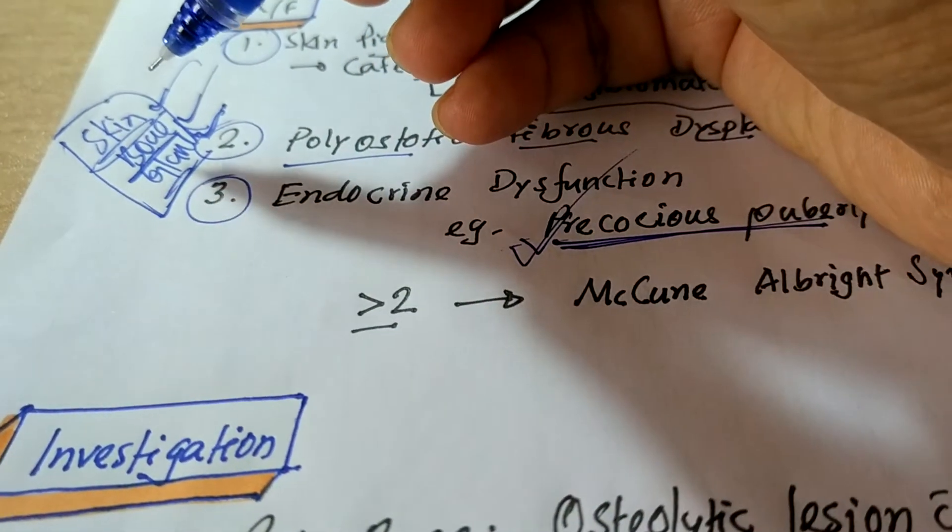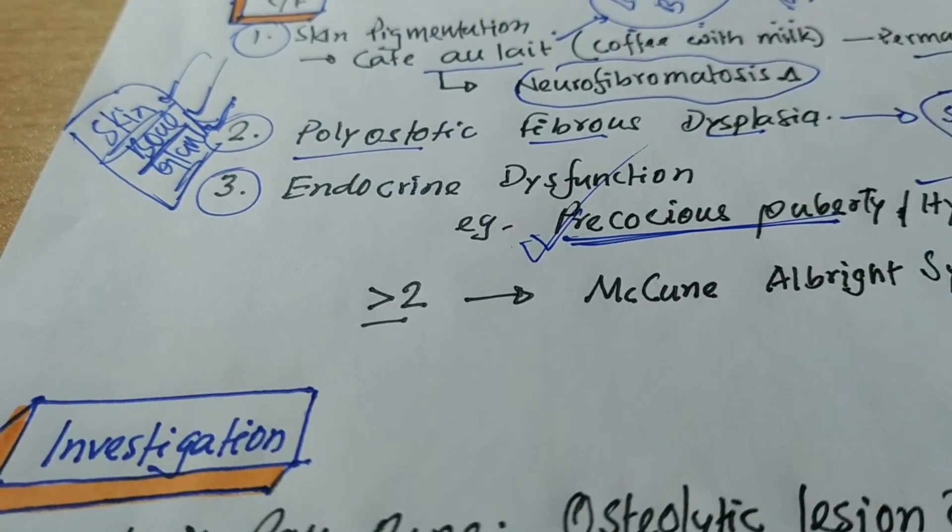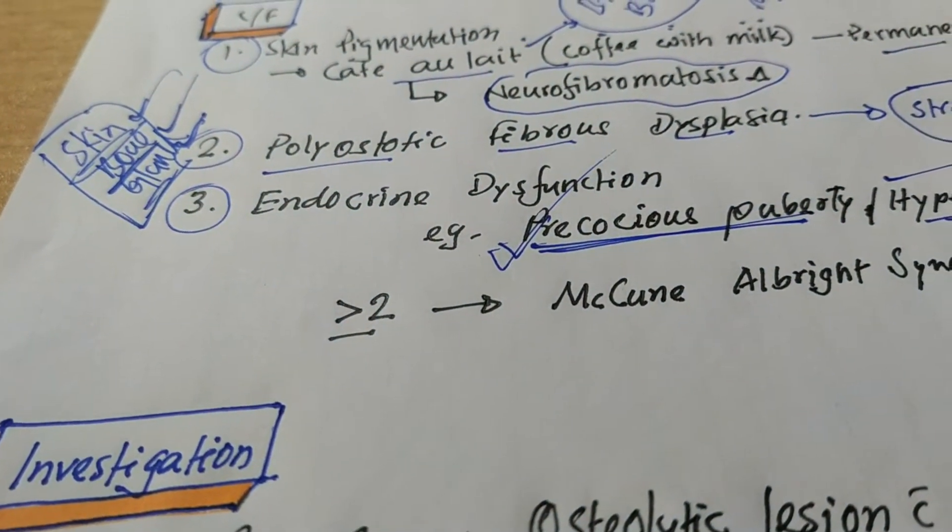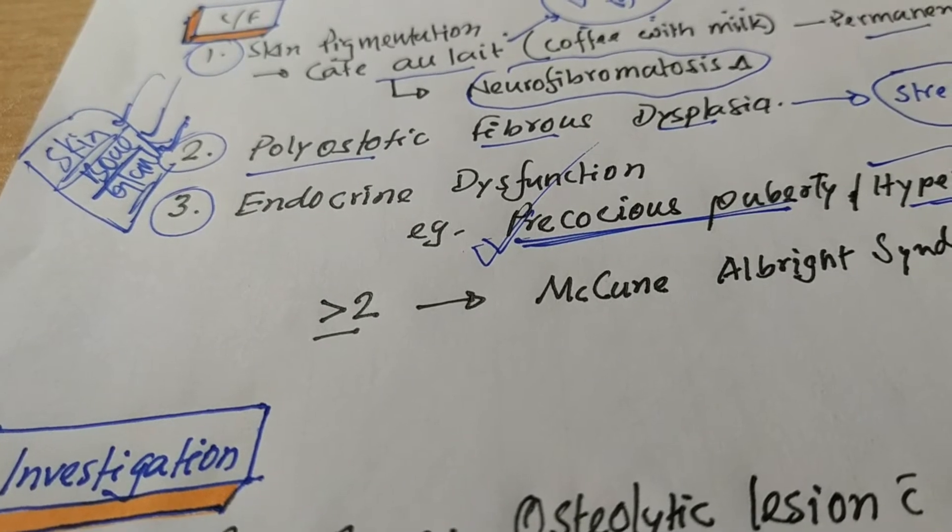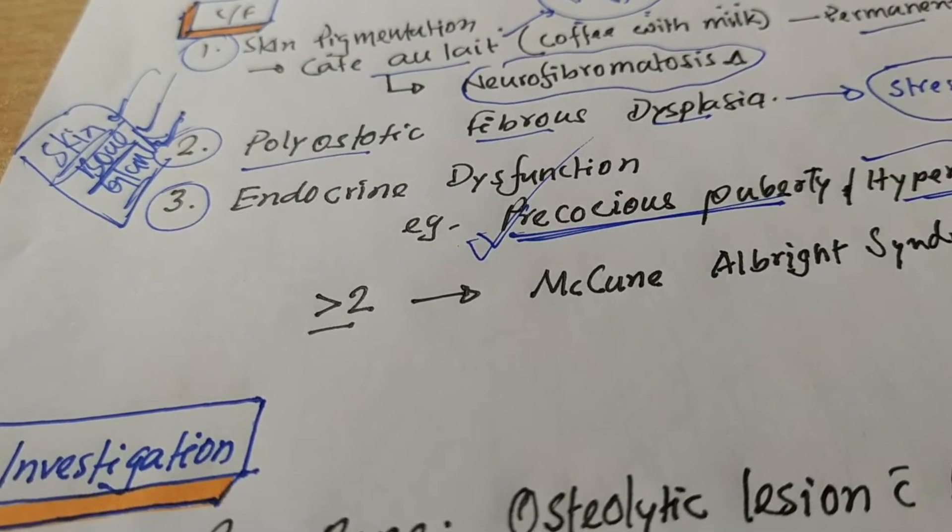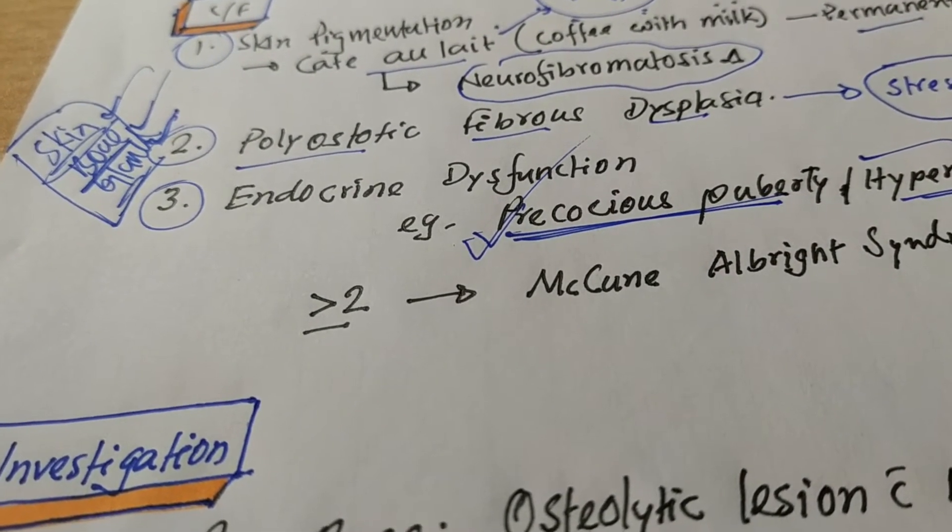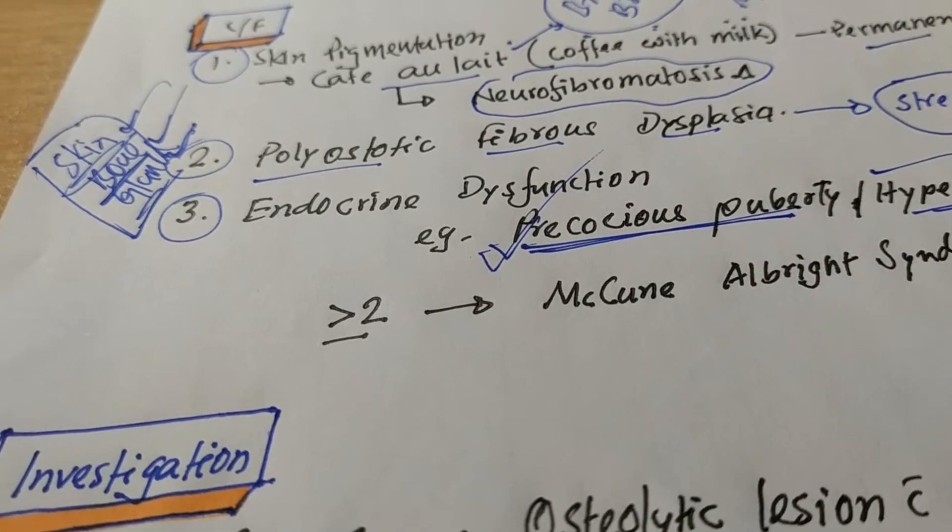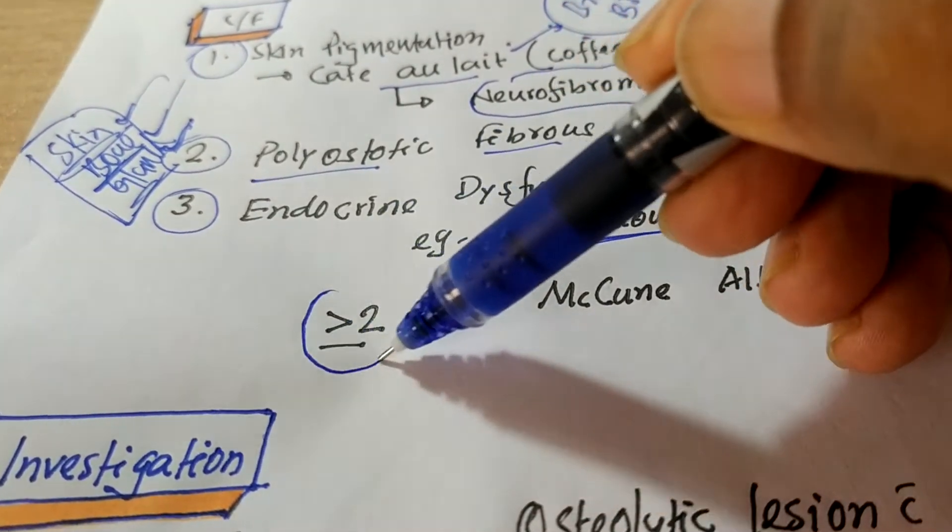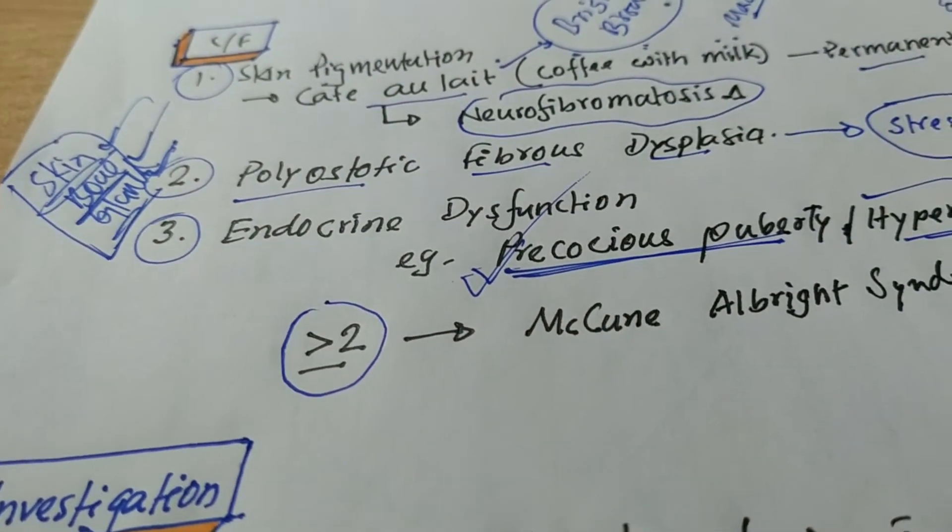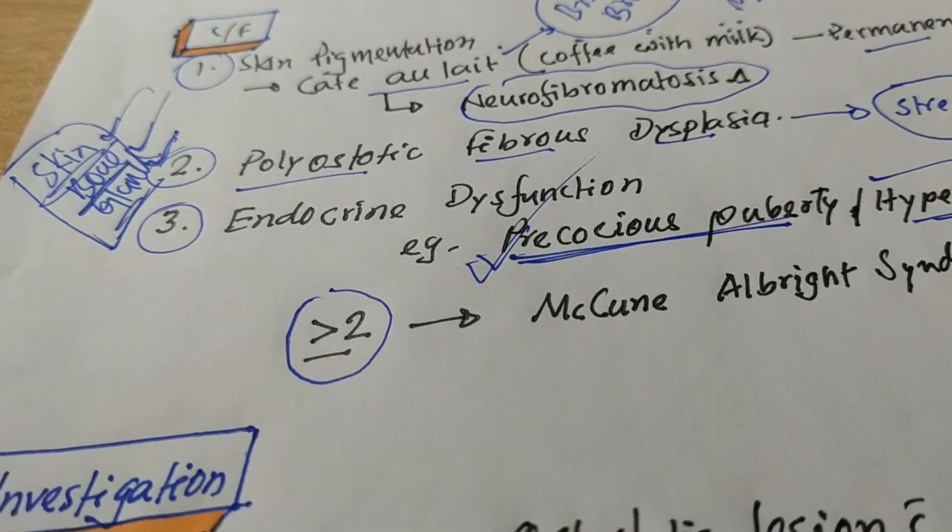So look at here. Ectoderm, mesoderm, endoderm, all the dermal layers of embryonic development are involved here. But for the diagnosis of McCune-Albright syndrome, only two or more than two of these three clinical manifestations are required.